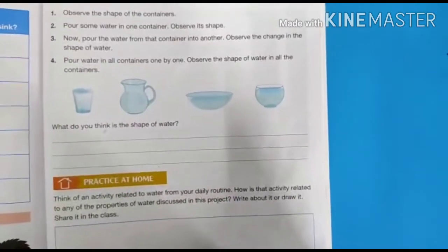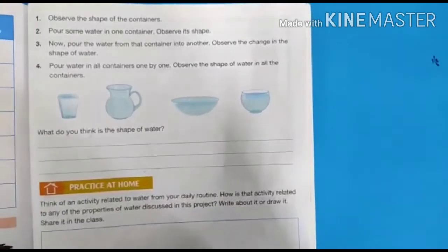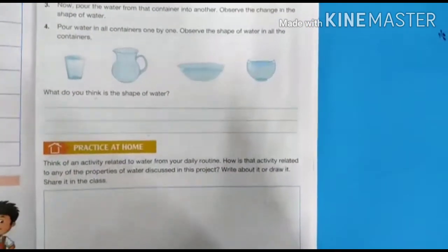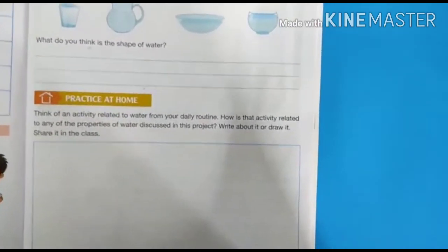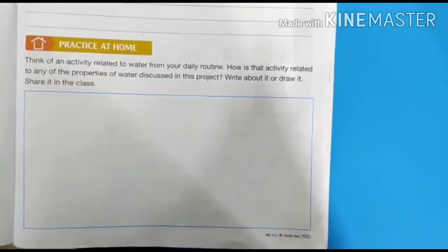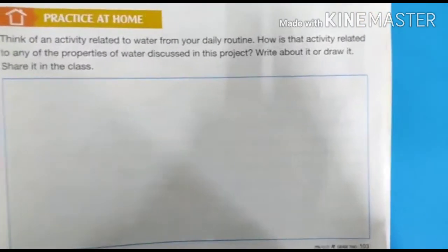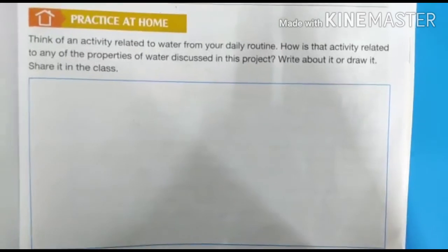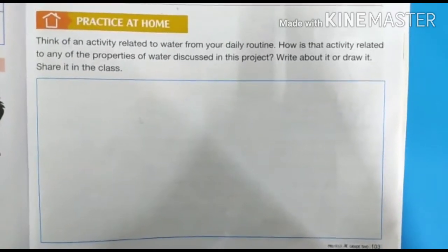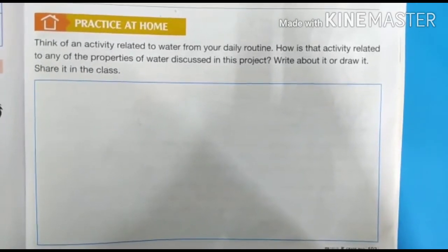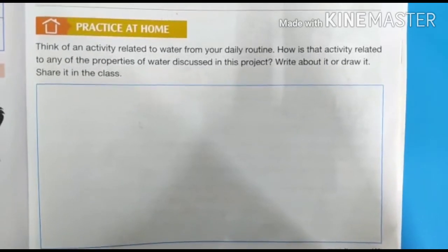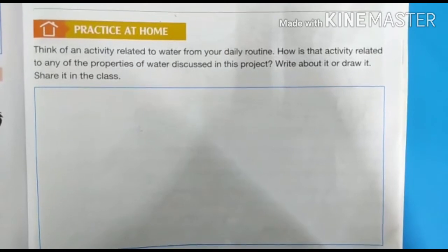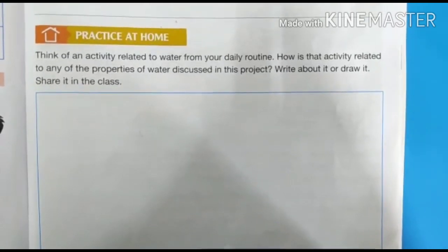Children, look at this page number 93, practice at home. Children, you have understood different properties of water like mix and don't mix, taste and smell of water, color of water, sink and float. Now here think of an activity related to water from your daily routine. How is that activity related to any of the property of water? Write about it or draw it.